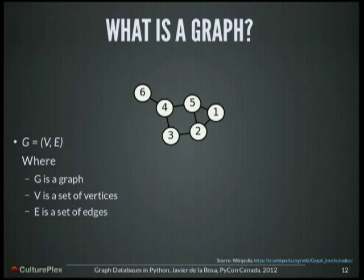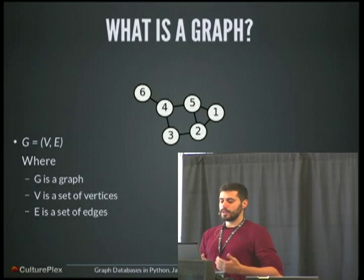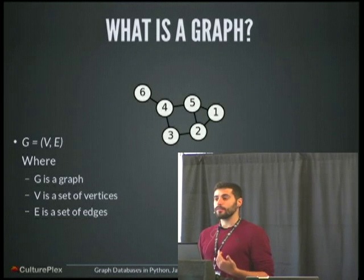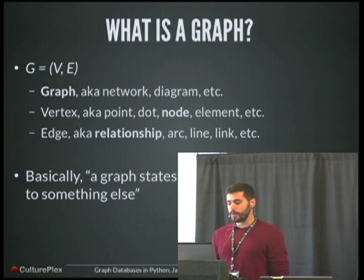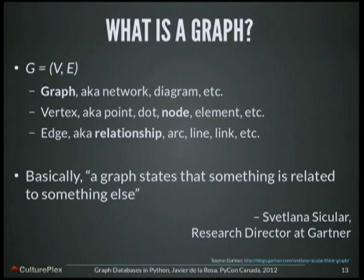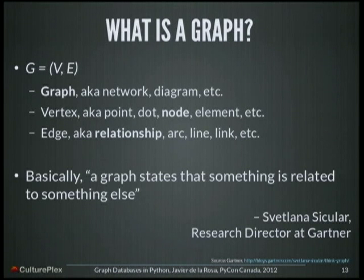So what is a graph? A graph is basically a tuple of two elements. The first element is a set of vertices — nodes, relations — and another set of edges. You can also call a graph a network or diagram. You can use point, node, or element to mean vertex, and you can use relationship or line to mean edge. I will use graph, node, and relationship, because I think it's the most intuitive way.